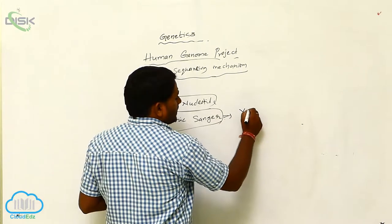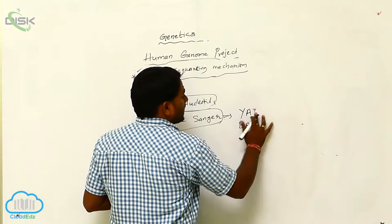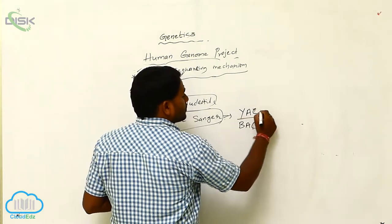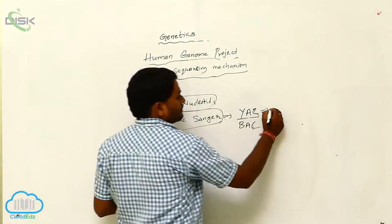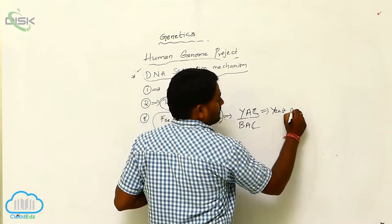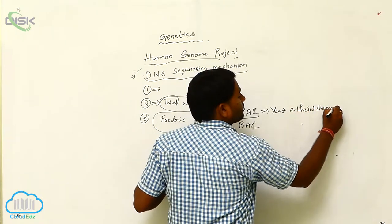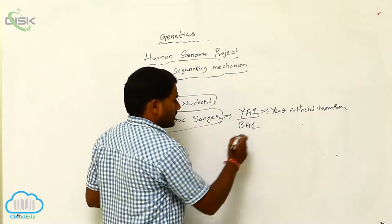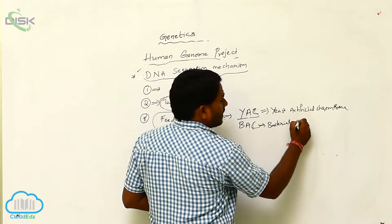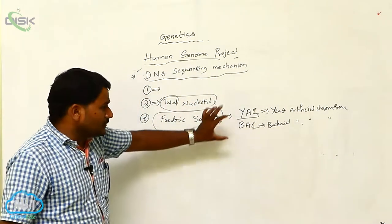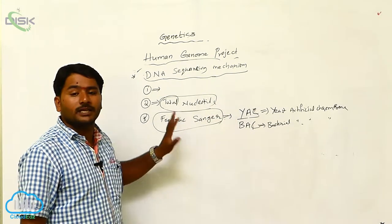The DNA probes are YAC and BAC. Y-A-C stands for Yeast Artificial Chromosome. BAC stands for Bacterial Artificial Chromosomes. These artificial chromosomes were used for the sequencing of DNA.